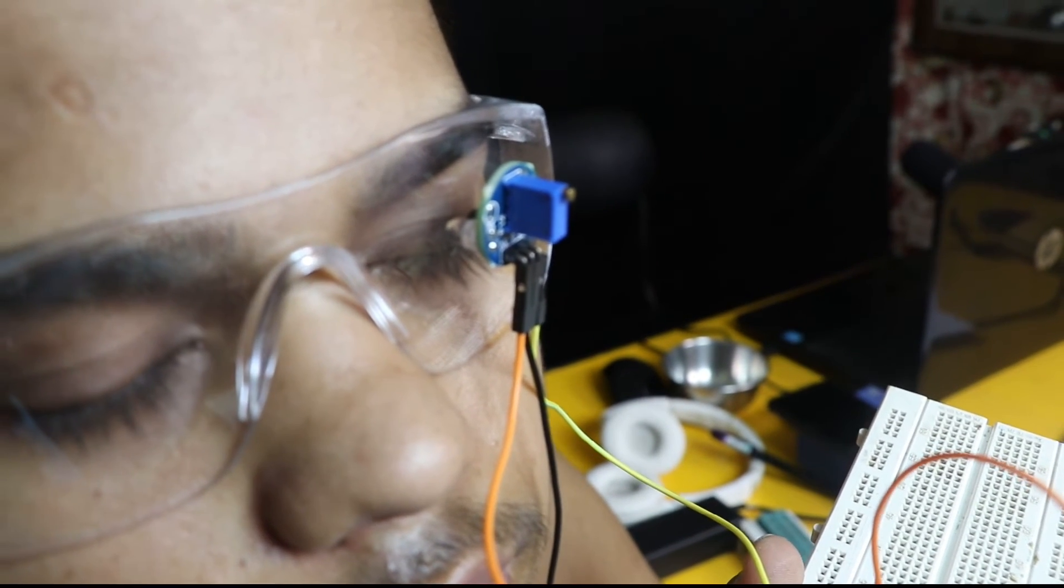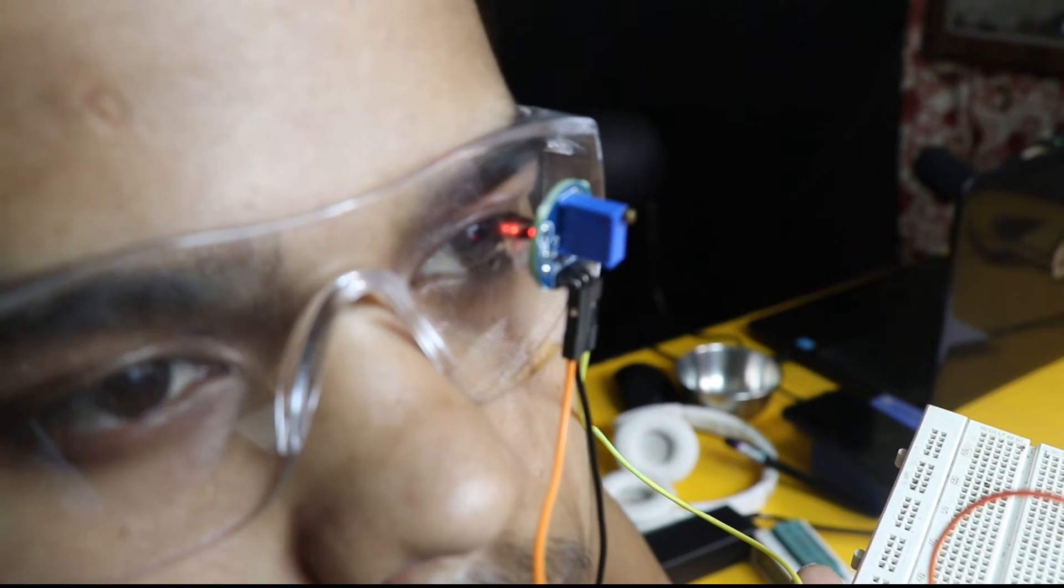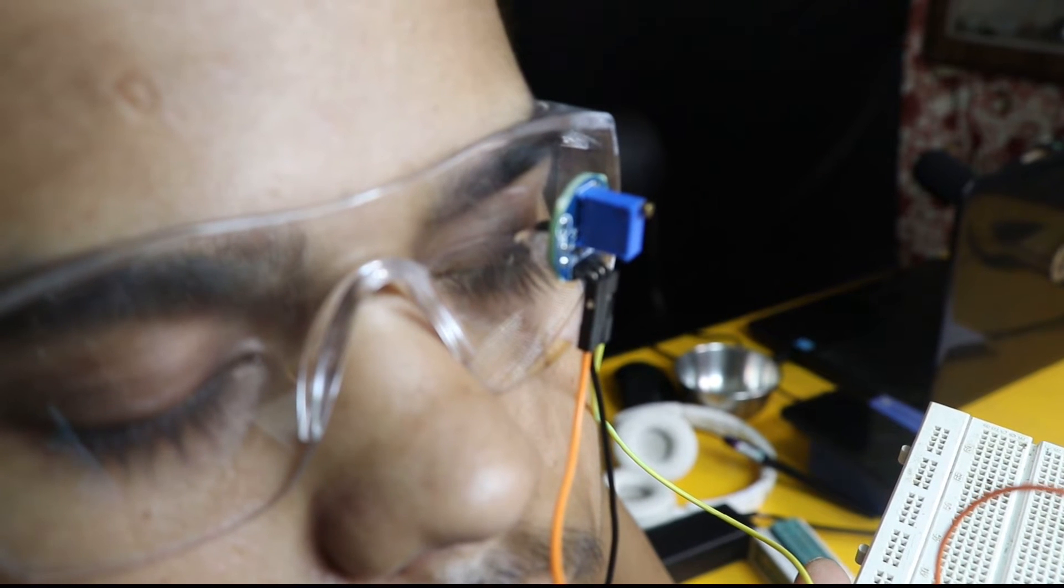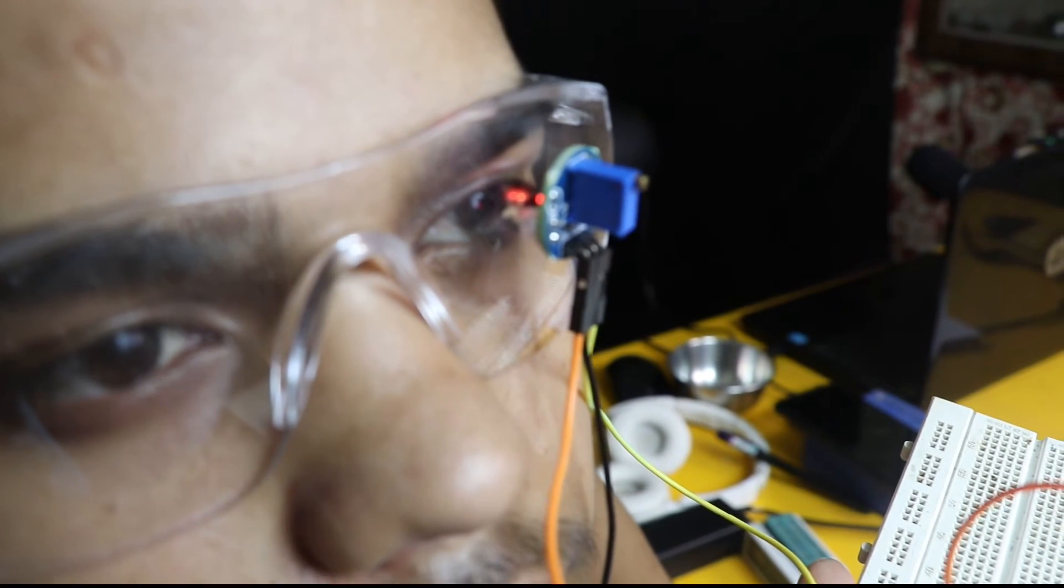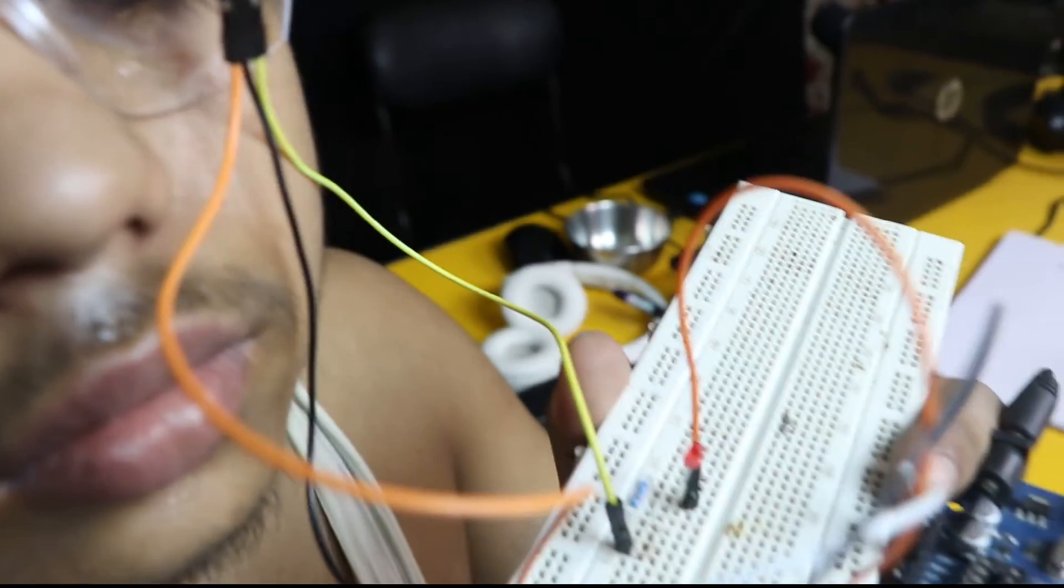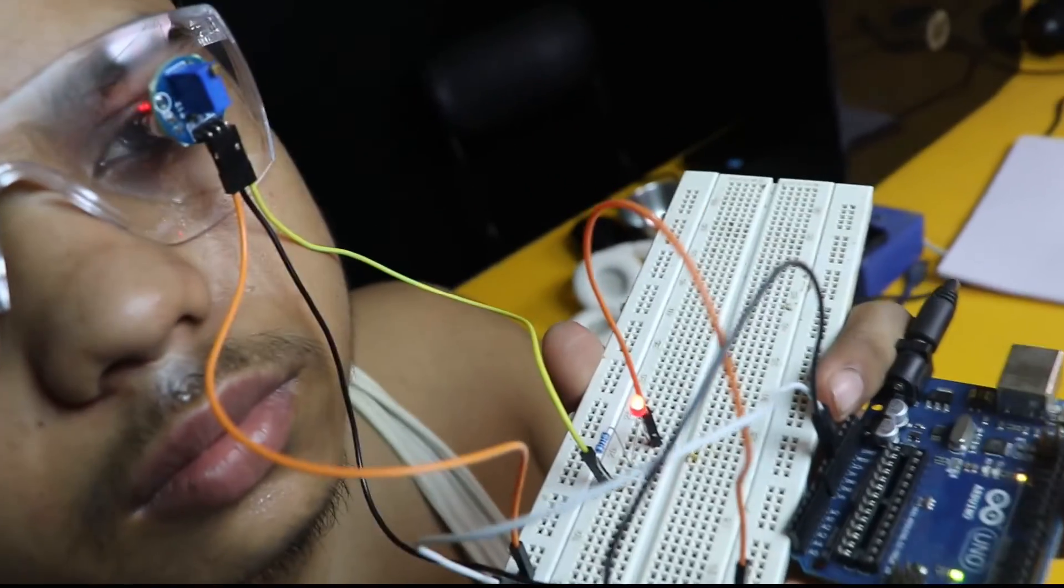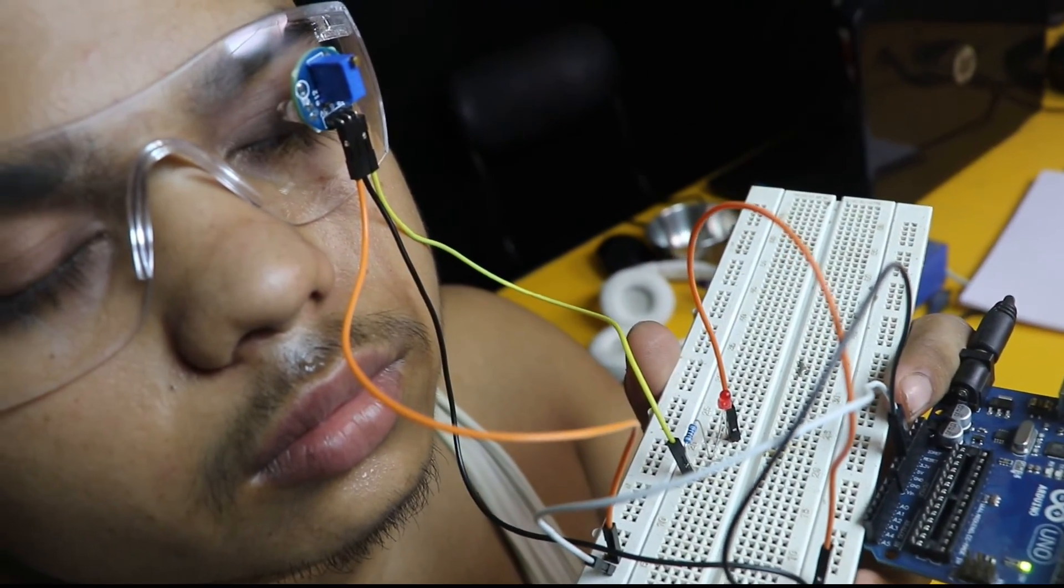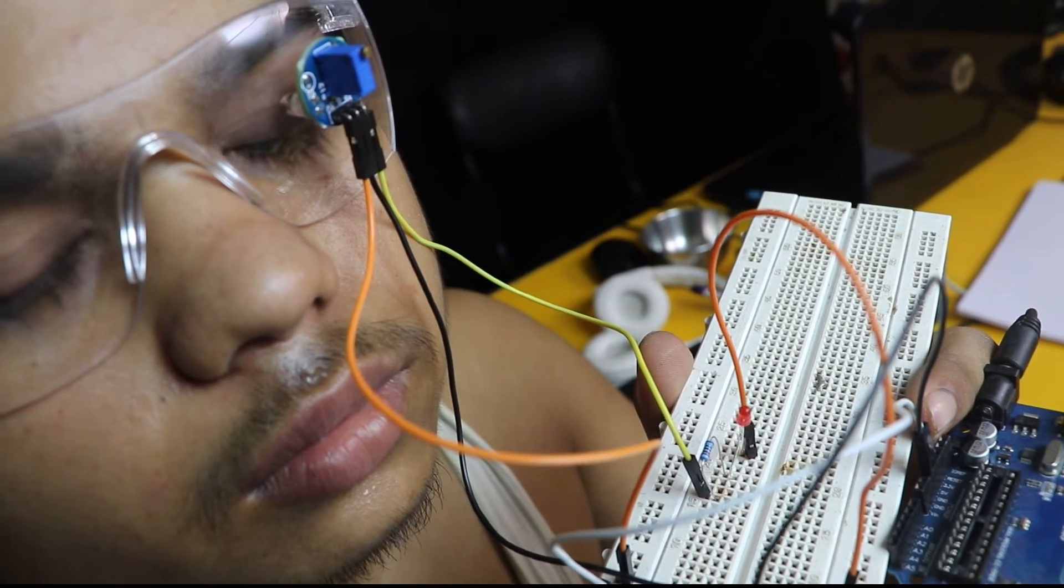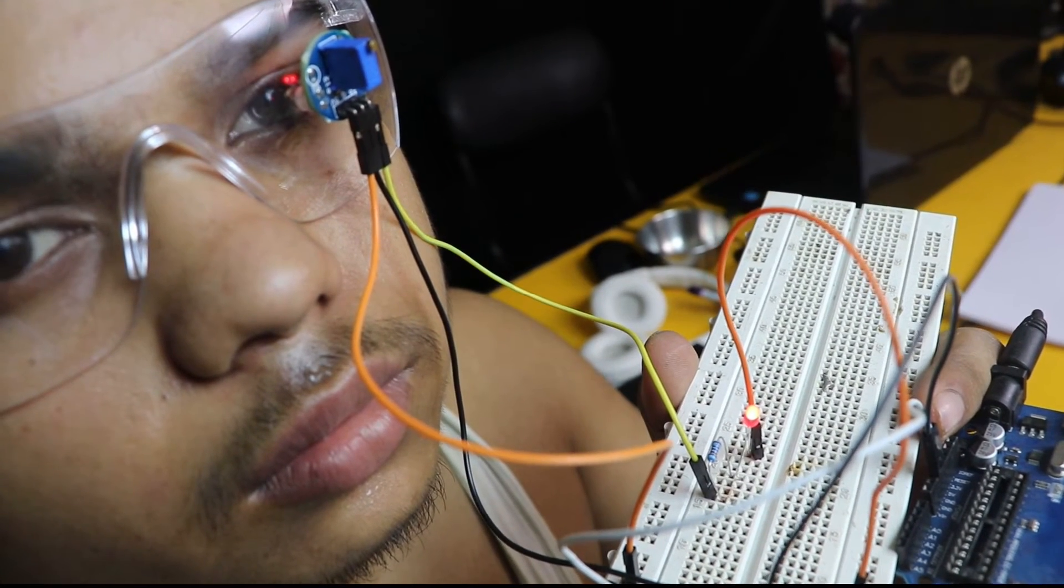You can use this eye blink sensor in other projects as well. For in-depth knowledge, check the link in the description to my website circuitsbazar.com where you will get the complete theory. This is how it's working - as soon as you open your eyes, light will be on, and as soon as you close your eyes, light will be off.